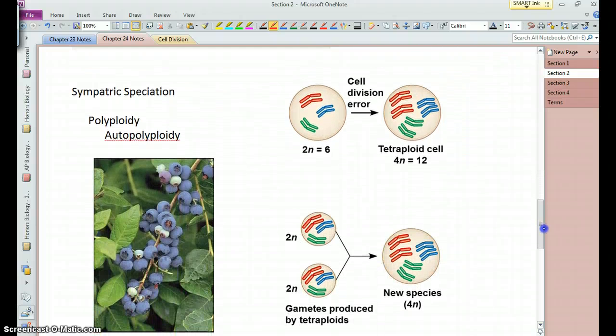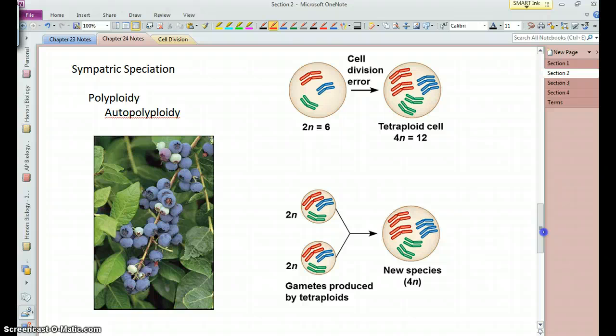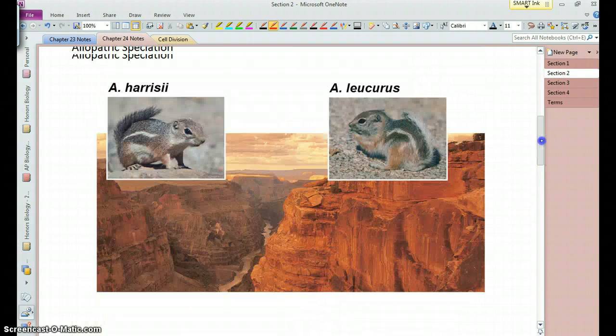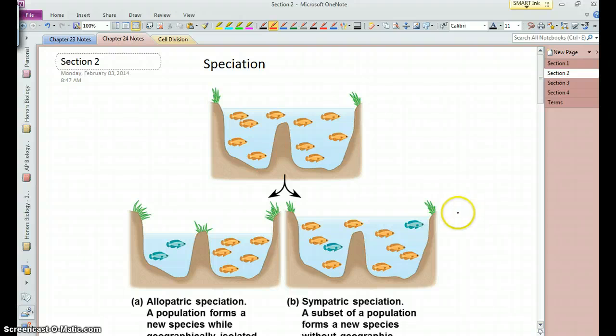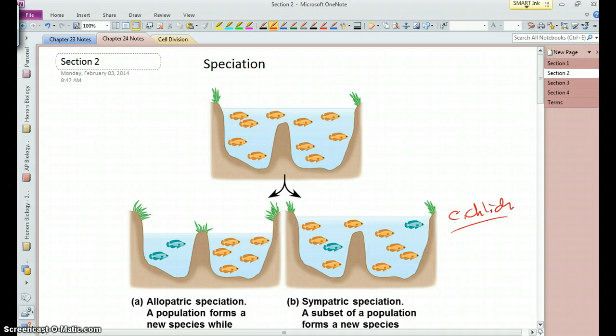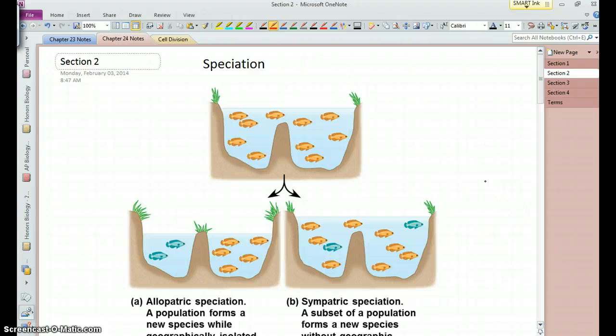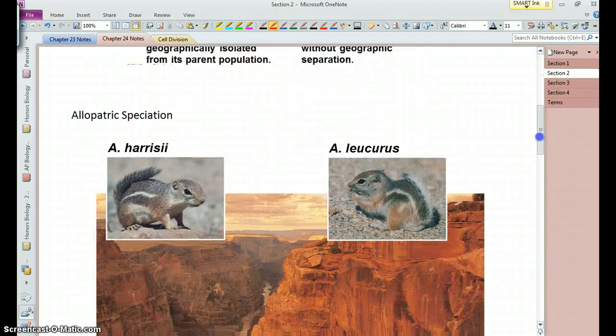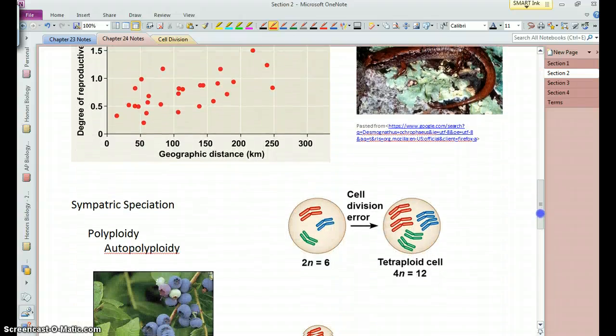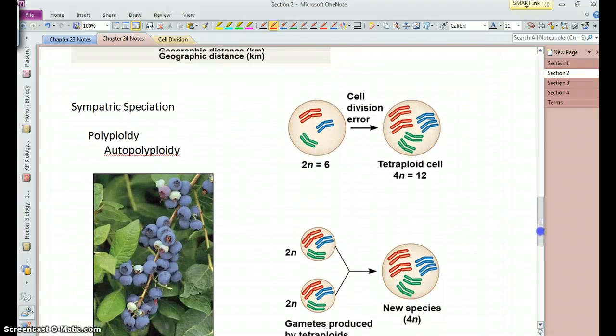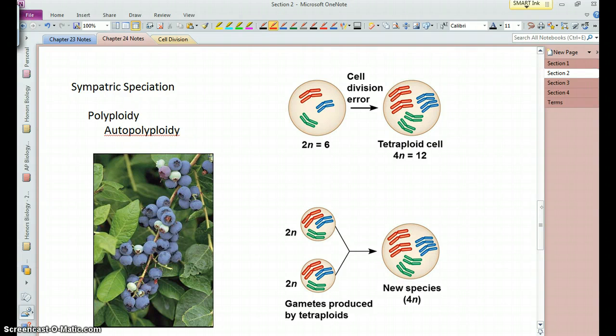Now, sympatric speciation within the same habitat, some good examples of this. Now, in our picture, they show fish, and there are these types of fish known as cichlids. And they have been known to most likely have reproduced or evolved into separate species sympatrically, they occupy the same lakes, but due to sort of slight niche differentiation within that lake, they begin to form subpopulations and then separate species. In plants, there's some good examples due to what's called polyploidy.